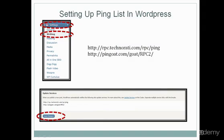Another thing you'll do is set up a ping list in WordPress. Most of the time this is already set up for you, so you don't really have to worry too much about it. A ping list basically means that every time you make a new post or make new changes to your blog, it's going to automatically ping a site such as Pingomatic, which will go out to about 20 or 30 other sites automatically and update them with your new listings. It'll go out to blog search engines and other search engines, helping your content get indexed.